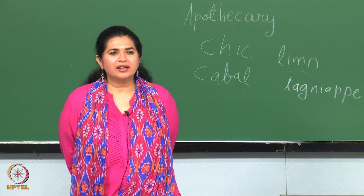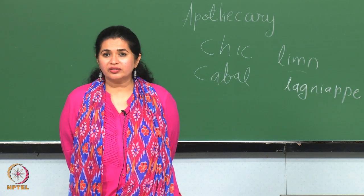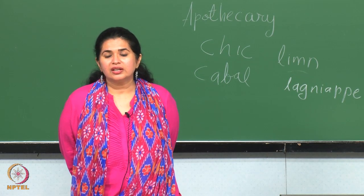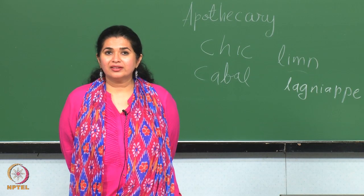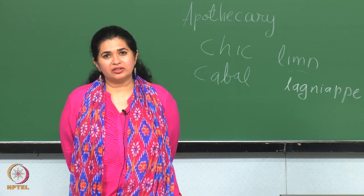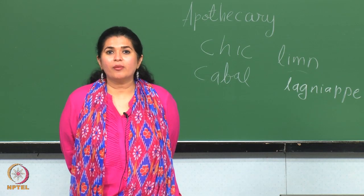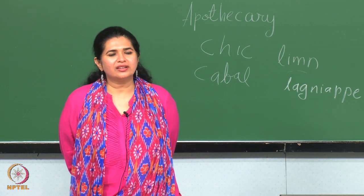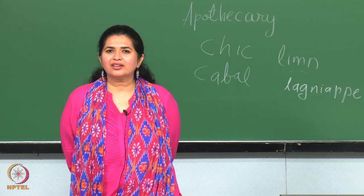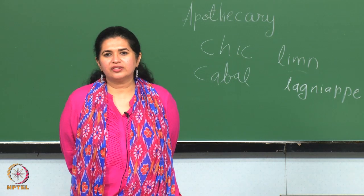Next word is lingua franca. We call English lingua franca — it is a name. Originally it was a name given to a mix of Italian, French, Spanish, Greek, and Arabic. Any hybrid language used by people of different speech to enable them to communicate and understand each other — it is a common language. Today we call English lingua franca. Earlier it was the Frankish language, which was a mix of French, Italian, Spanish, Greek, and Arabic.